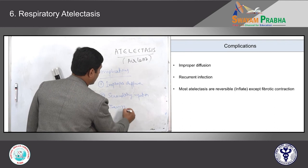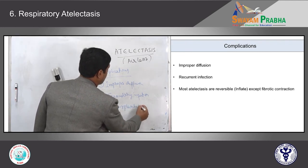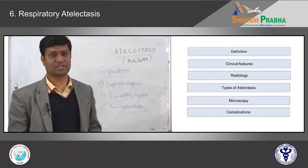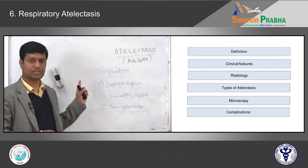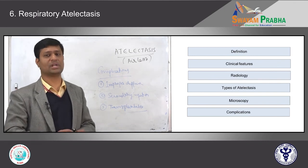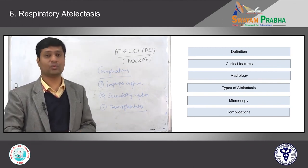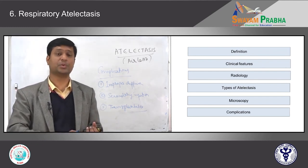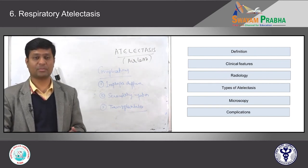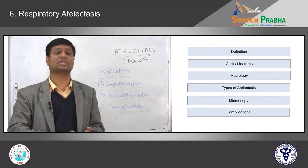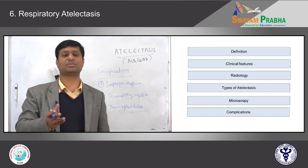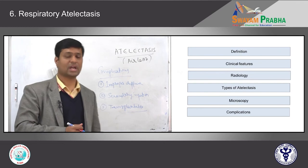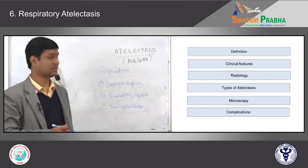In today's class, we spoke about atelectasis — airless lung — covering its definition, subtypes (neonatal and adult atelectasis), clinical features, radiological features, gross and microscopic examination, the three subtypes (resorption, compression, contraction atelectasis) with their reversibility and pathophysiological mechanisms, and complications. In the next class, we will talk about pulmonary edema. Thank you.